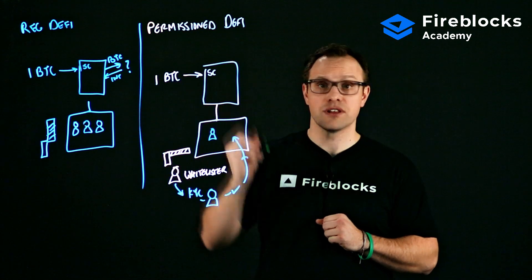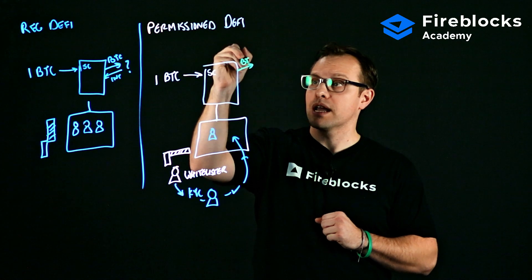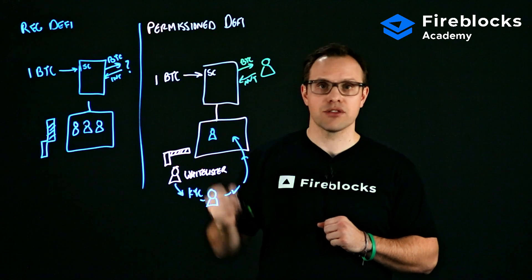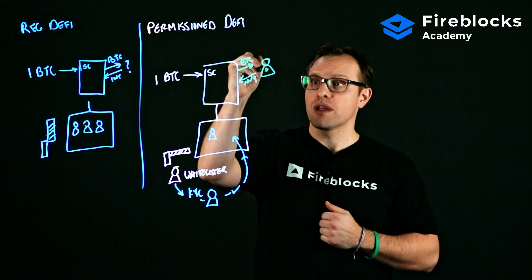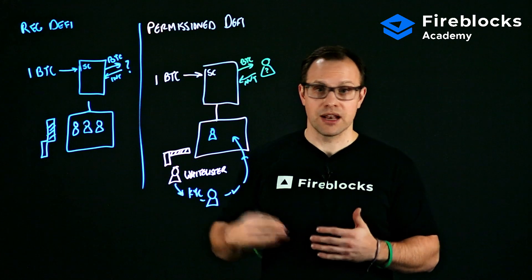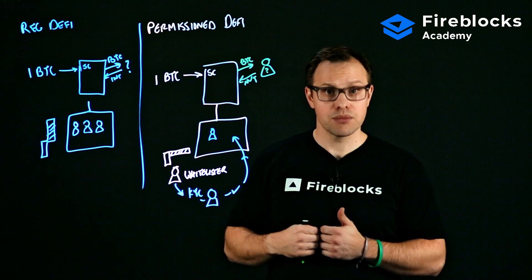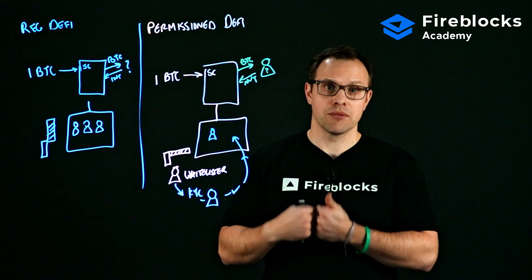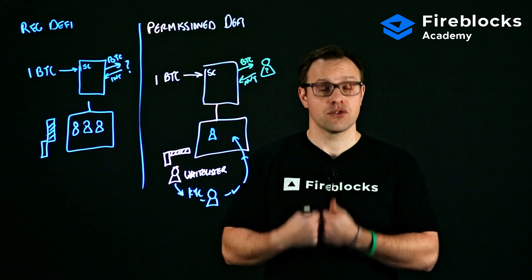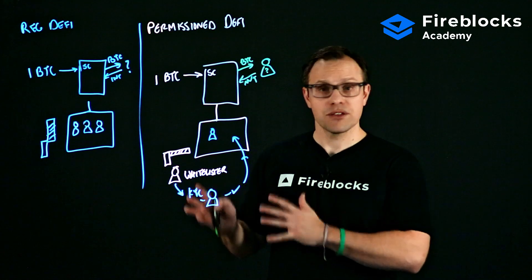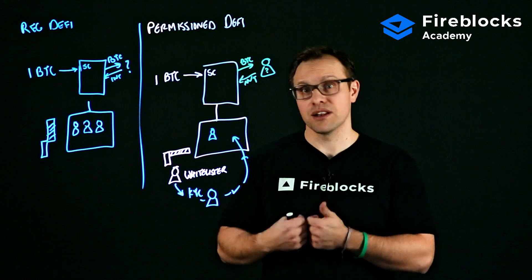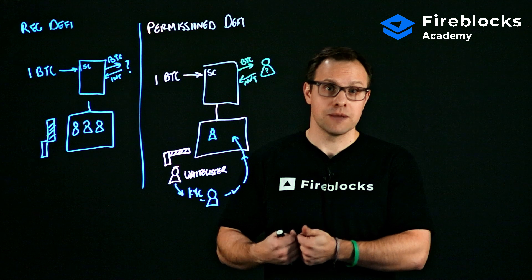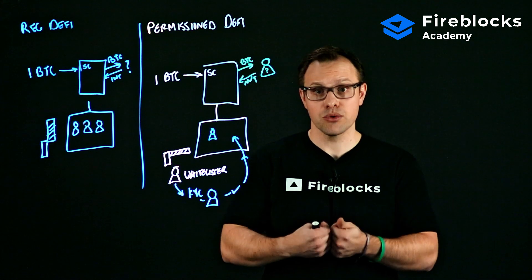Once someone is okayed by the whitelister, they can go ahead and enter. So I have my one Bitcoin, I pledge it into the smart contract, I'm lending my Bitcoin out and getting paid interest back. I still don't know exactly who this individual is, but I know that they've at least gone through the KYC process. As a regulated institution, I can feel much more comfortable knowing that the people I'm potentially interacting with in this liquidity pool have been vetted from a KYC perspective — which should make my compliance and risk teams feel much more open to engaging in the DeFi world.